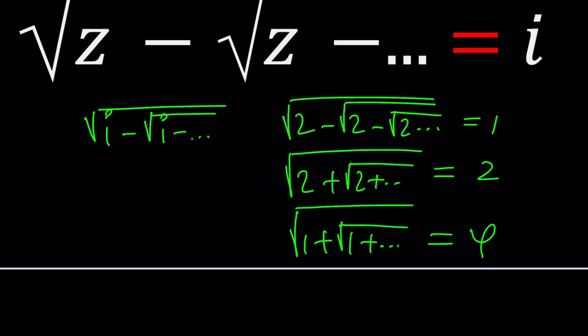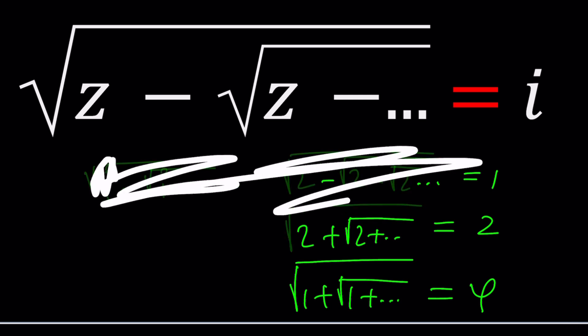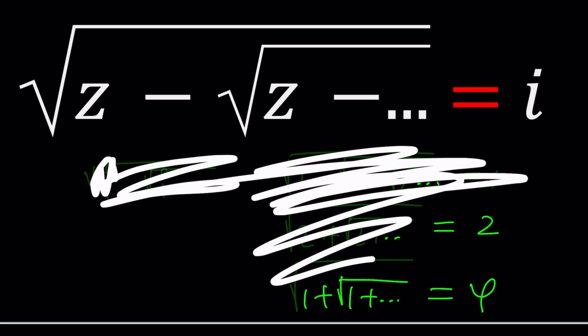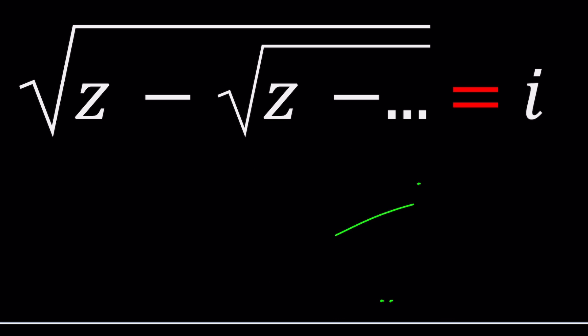But that's not what we have here. We have a variable. So we're basically looking for a particular z value for which this expression, this infinite radical, converges to i. Is that possible? Let's find out.